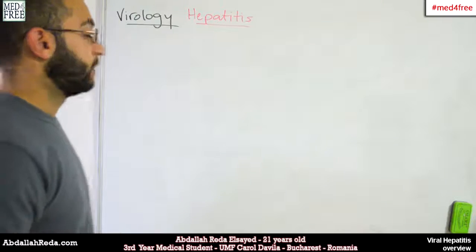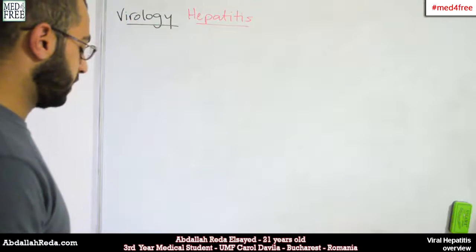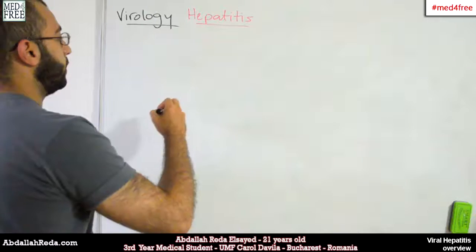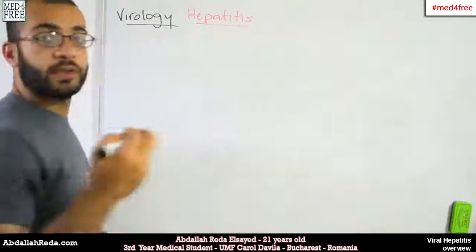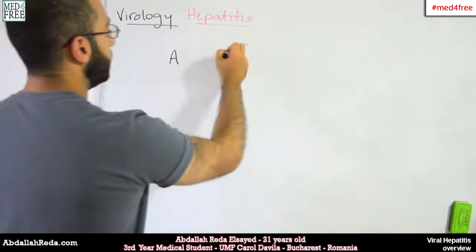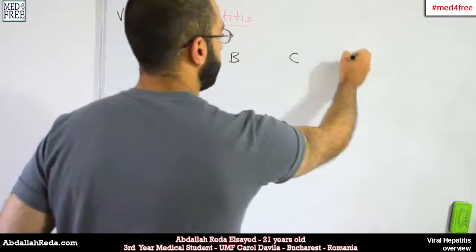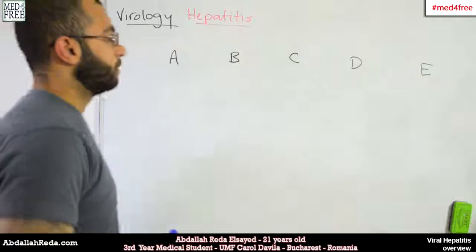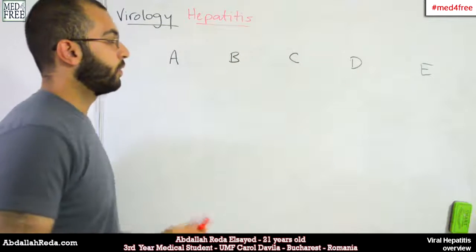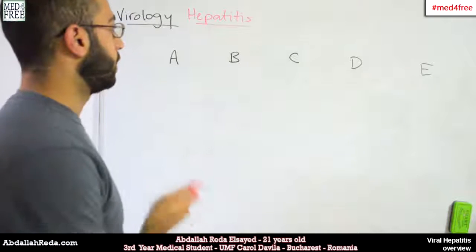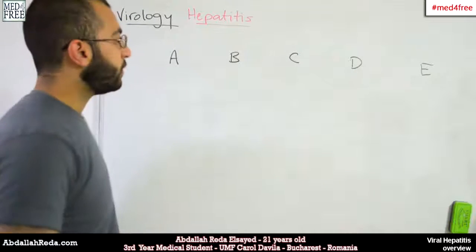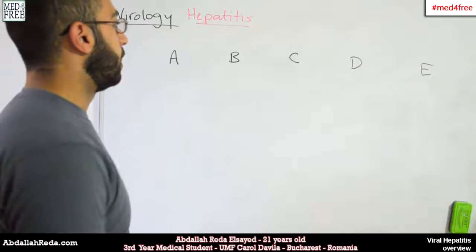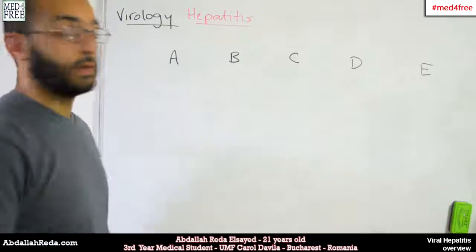Today we're going to talk about viral hepatitis. We have five types, and they're very easy to remember — they're the first five letters of the alphabet: A, B, C, D, and E. We're going to mention some important points about each one of them, and then we're going to talk about the serology of hepatitis B — what kind of markers, antigens, and antibodies are used to assess the state of the patient.